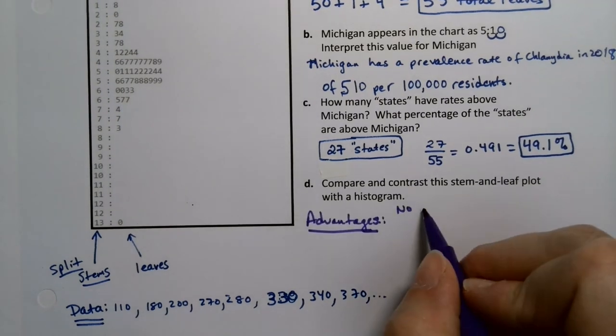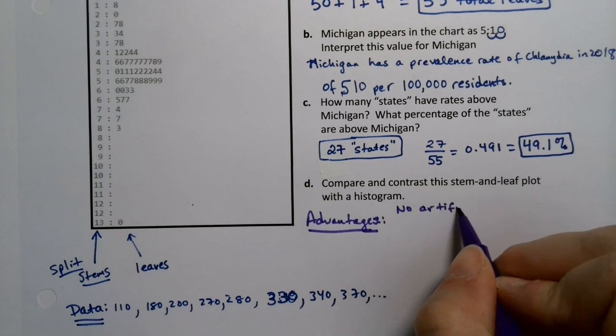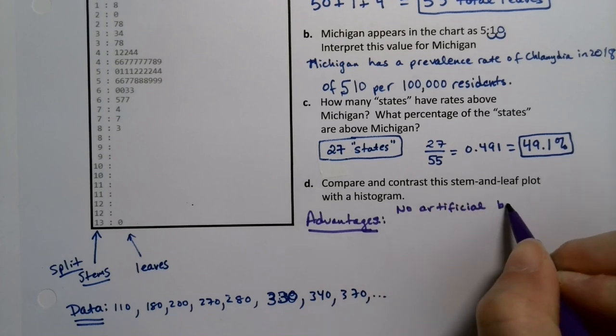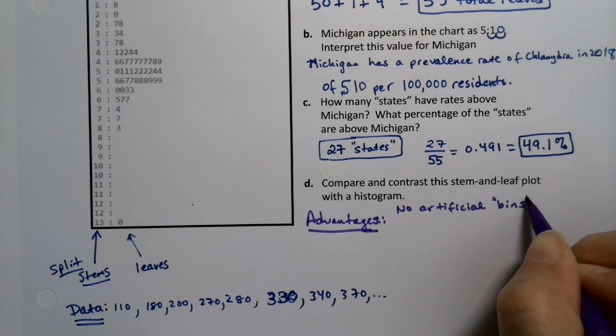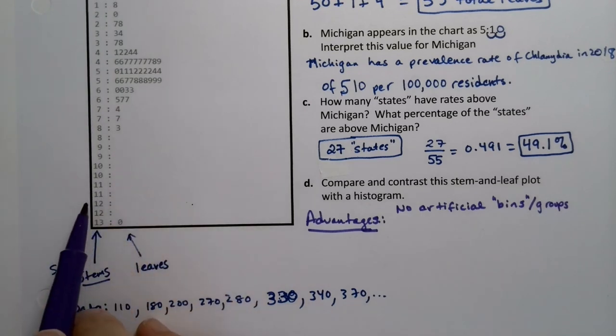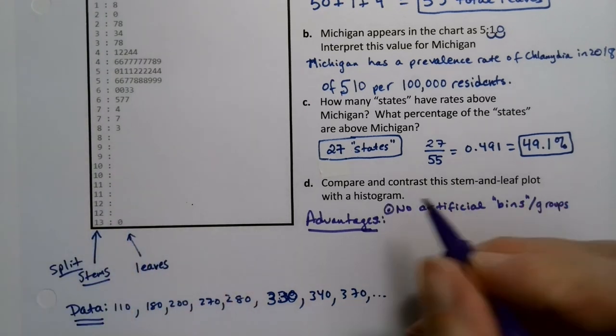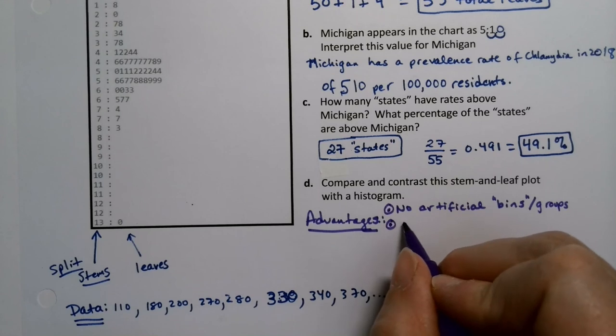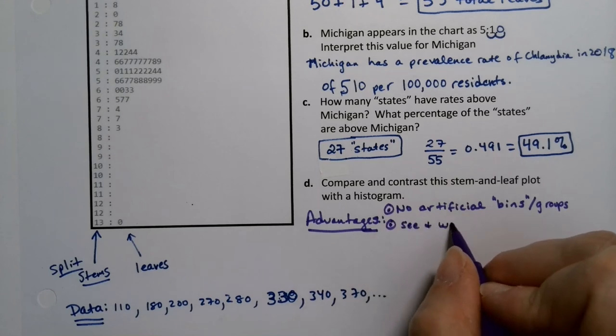So for the advantages, there's no artificial bins, right? We don't have to make groups and put the people into those groups. It's just based on the number system. So that's nice.